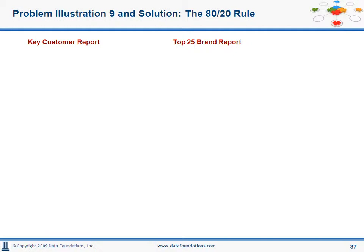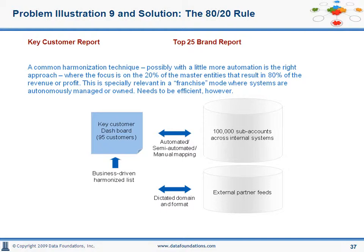Moving on to the key customer report and the top 25 brand report — I'm sure you have seen these requirements at some time or other in your organization. Predefining the list of customers or brands for reporting purposes can be a good thing, and we think it's a good idea, as it is an effective means of harmonization in the absence of an MDM framework. It's particularly effective in the franchise business. So if 20% of your customers are responsible for 80% of your revenue, harmonize that 20% — it is likely to be easier and more maintainable, and you can use this as a starting point to get the remaining customers harmonized.